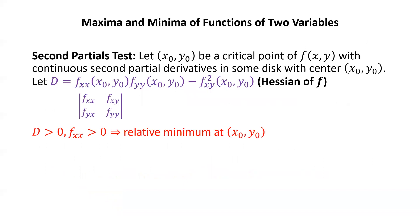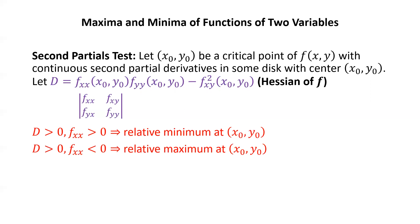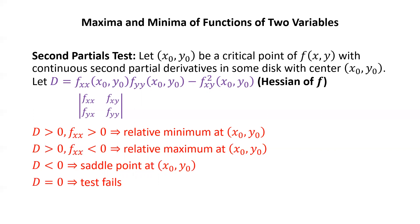After computing D: if D is positive and fxx is positive, then we have a relative minimum at (x₀, y₀). If D is positive but fxx is negative, then there's a relative maximum at (x₀, y₀). If D is negative, we have a saddle point — a point where there are at least two different traces, one with a relative minimum and one with a relative maximum. If D equals zero, the test fails and you'll need a deeper analysis to determine the nature of the critical point.